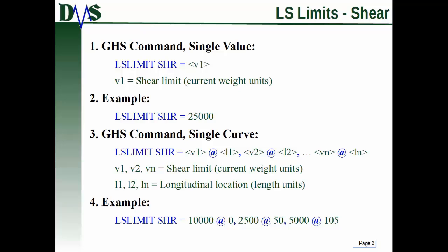But quite often with regulations, this limit actually varies based upon your location on the vessel. So you can define that curve itself. The way you do that is LSLIMIT shear SHR equals, but instead of giving it a single value, we give it pairs of V1 at L1, V2 at L2, all the way up to however many pairs you need. That's the shear limit at a current location, another shear limit at another location, all the way up to however many points you need.